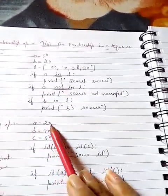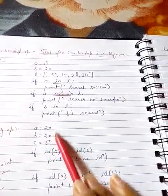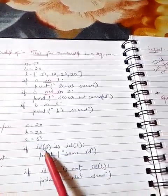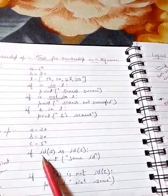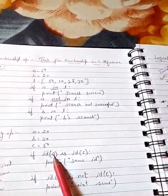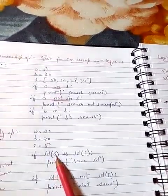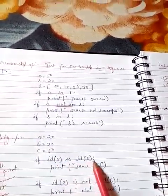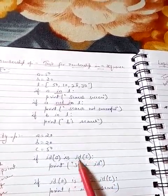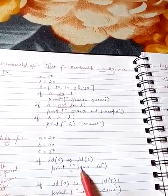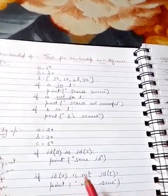For example, a is equal to 20, b is equal to 20. Here I am giving the values here to the variables. So c is equal to 50. If id of a, id is the function which returns location value of the variable. If id of a is id of c that means if the location is same, if the id is same then this print statement will be executed otherwise it would be skipped.